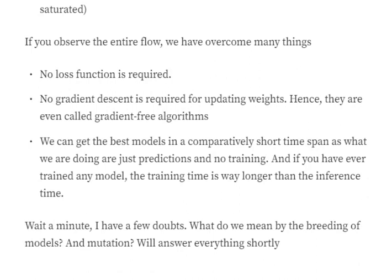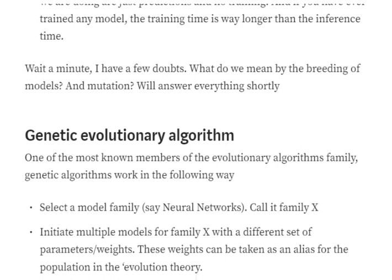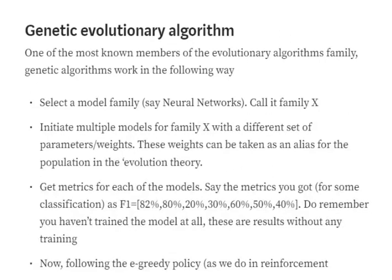Now let's understand what cross-breeding and mutation mean in terms of a machine learning algorithm. We will explain the genetic evolutionary algorithm with an example. Assume we select a model family — say neural networks with the same architecture — and call it family X. The same architecture means we have the same set of weights with the same dimensions. We initialize multiple models from family X with different sets of parameters and weights. These weights can be generated randomly or sampled from different distributions — that is your choice. These weights can be taken as analogies for population members in evolution theory.